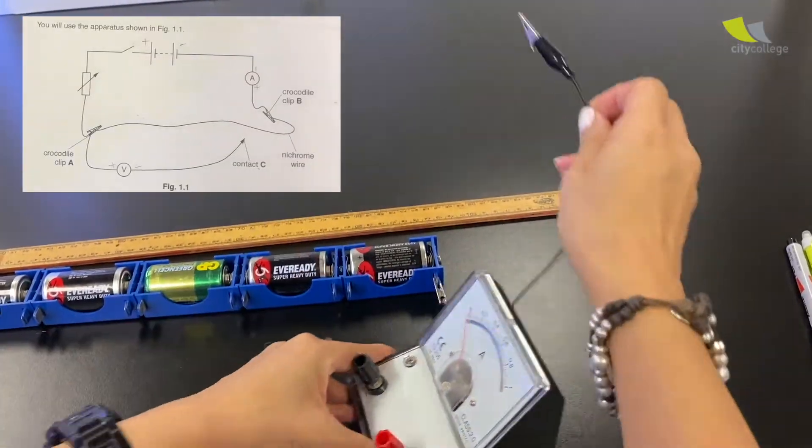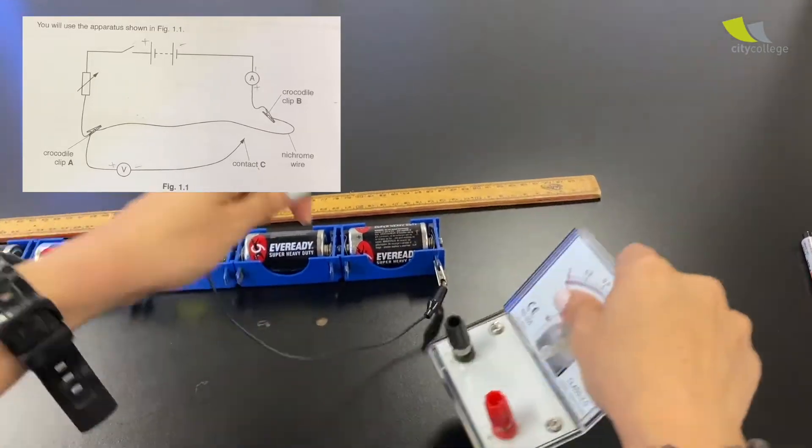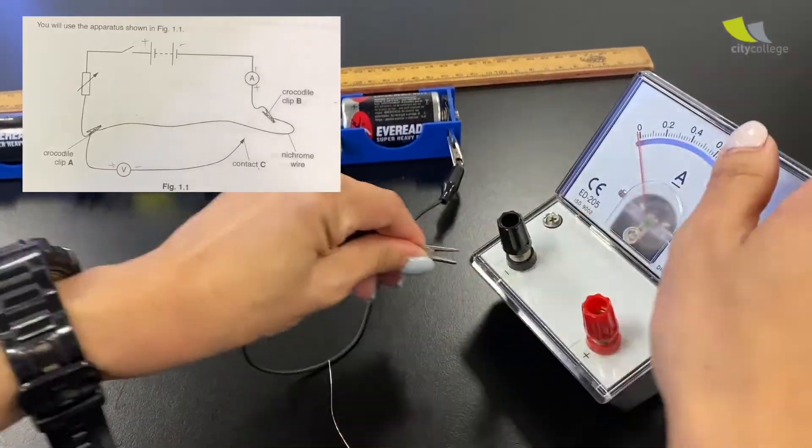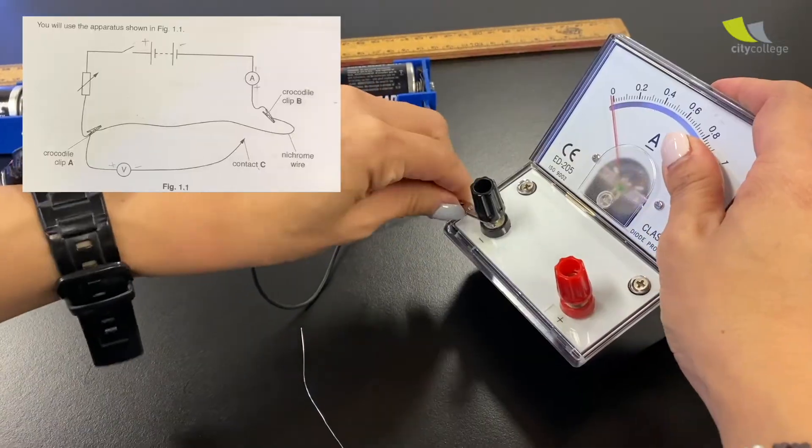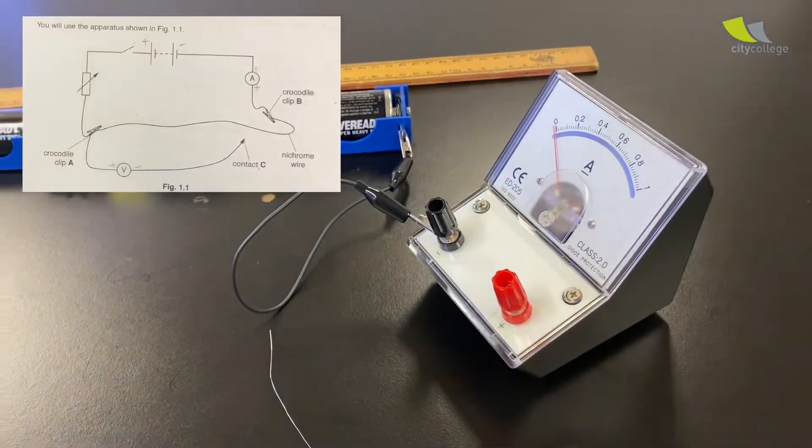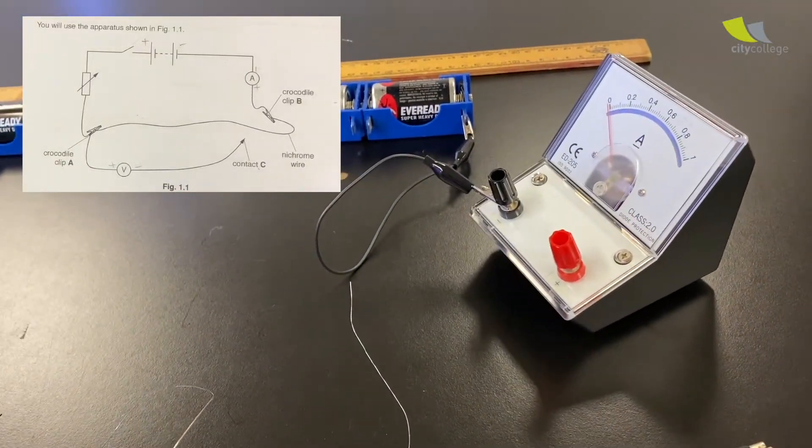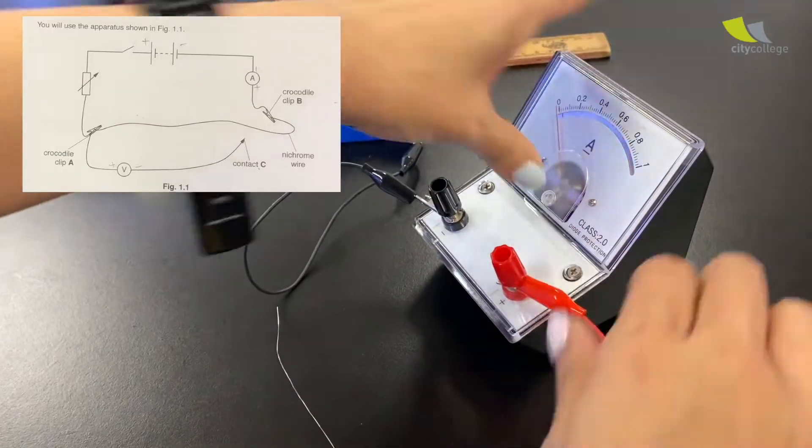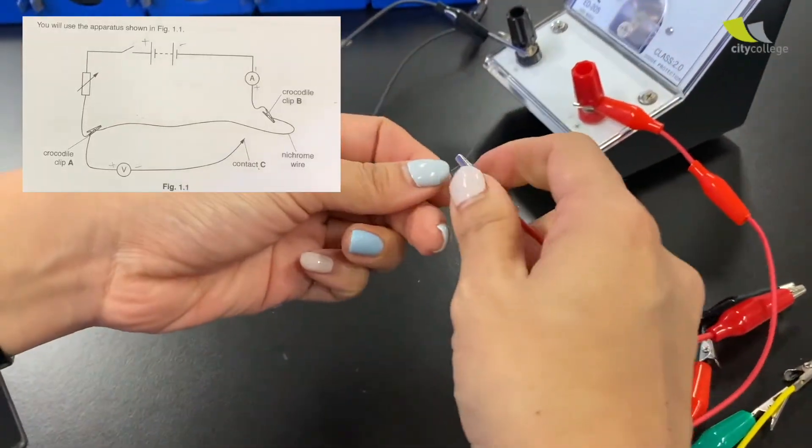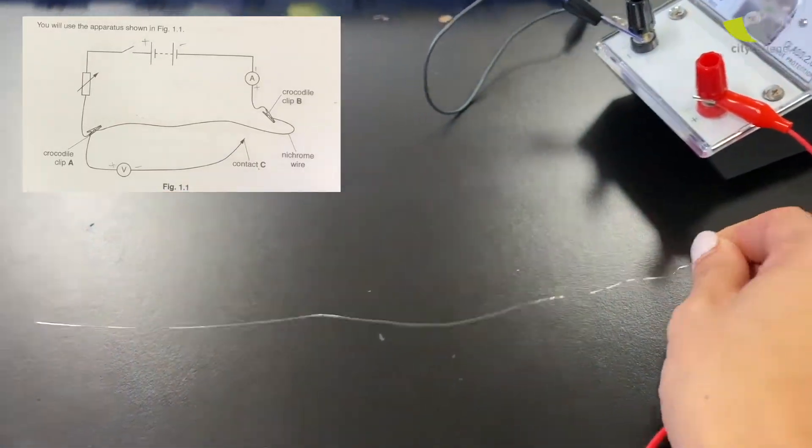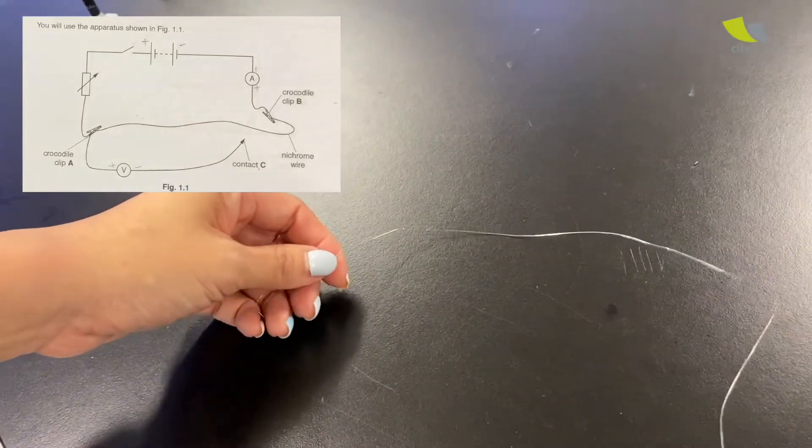So connect one end to the battery. So because that end is a negative terminal, so it's going to go to negative. Well done. And the other end. Let's go. Go to the nichrome wire. Just clip it at the end. Yep. And go to the other end of the nichrome wire.